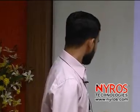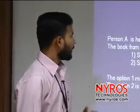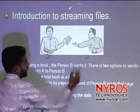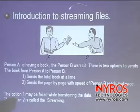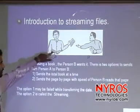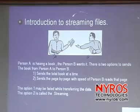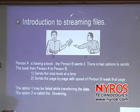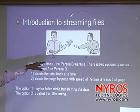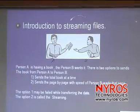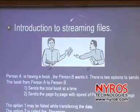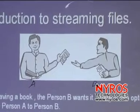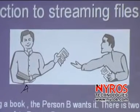Introduction to streaming files. The picture shows person A and person B. Person A has a book of data — one book — and person B wants that book. There is a transfer from A to B, and there are two options: one is the whole book can be transferred to B at one time, and the next option is sending it page by page to B.